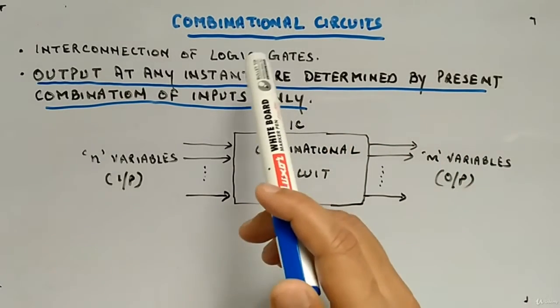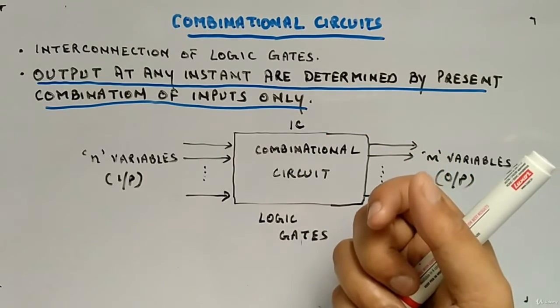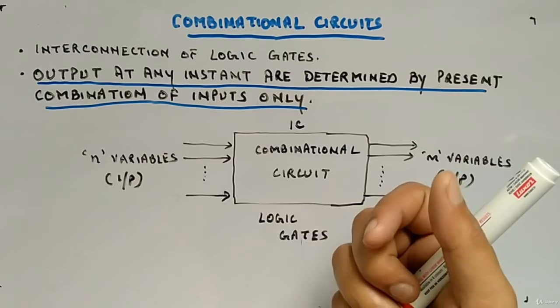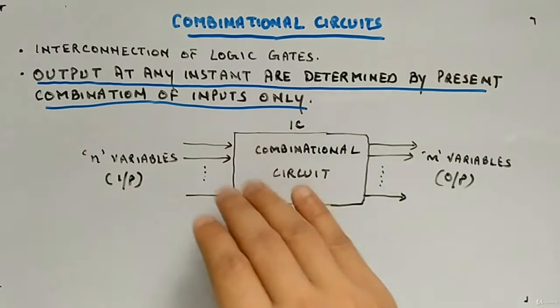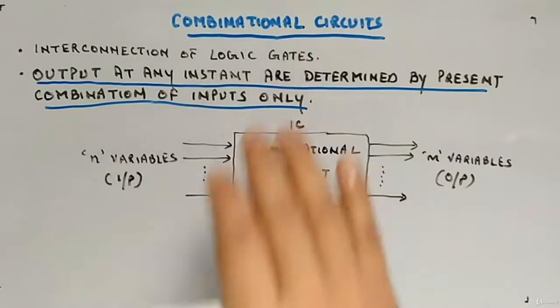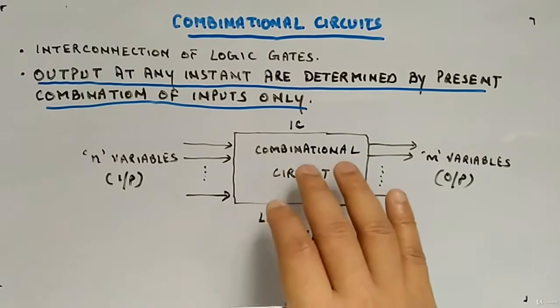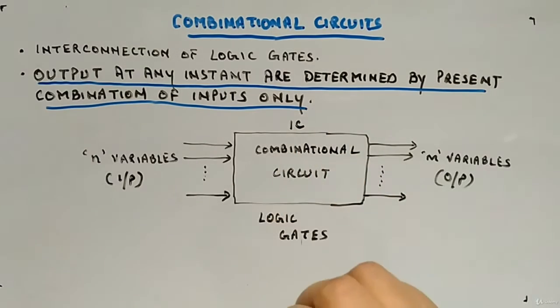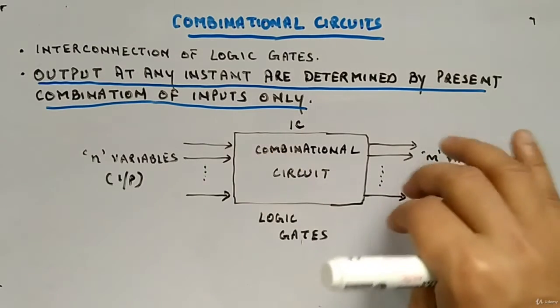Now, in combinational circuits, we will design actually, we will start designing the circuits, digital circuits basically. What it is, combinational circuit, you can think of it as a box which has interconnection of logic gates. There are bunch, lots of logic gates interconnected in some manner.